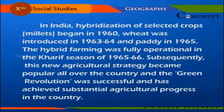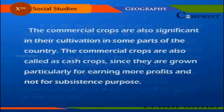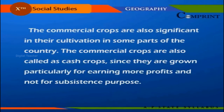Hybridization of selected crops — millets began in 1960 and wheat was introduced in 1965-66. Subsequently, this new agricultural strategy became popular all over the country, and the Green Revolution was successful and achieved substantial agricultural progress in the country.